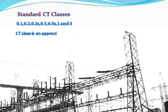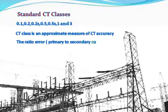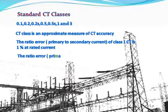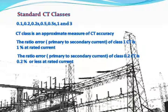CT class is an approximate measure of CT accuracy. The ratio error, that is, primary to secondary current, of a class 1 CT is 1% at rated current. Similarly, the ratio error of a class 0.2 CT is 0.2% or less at rated current.